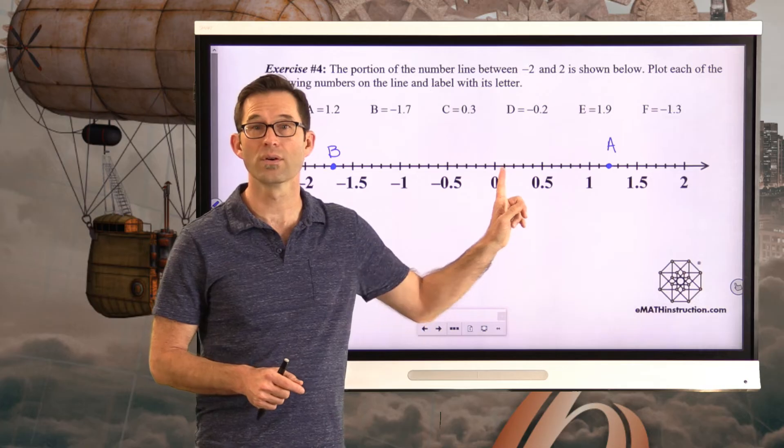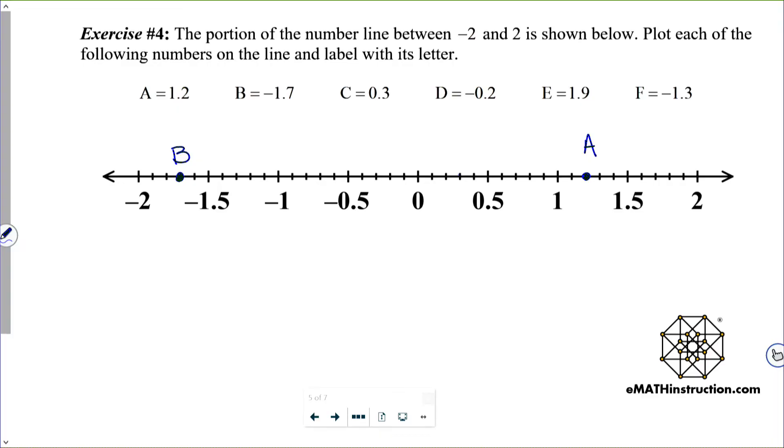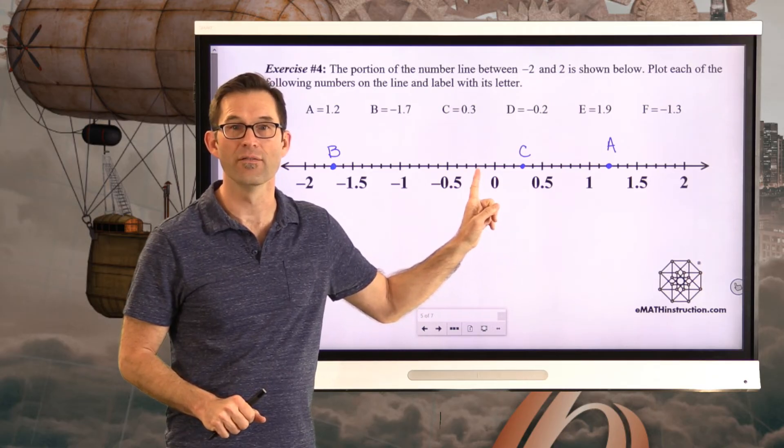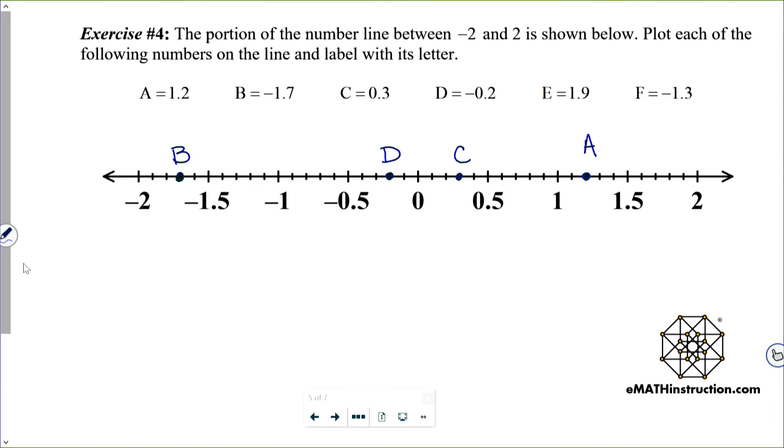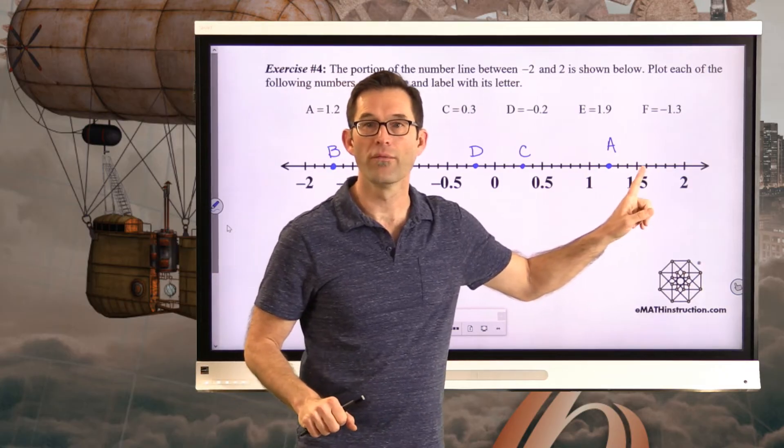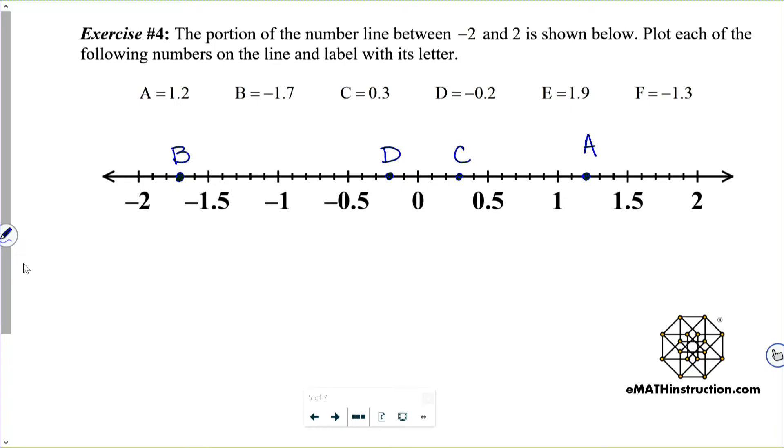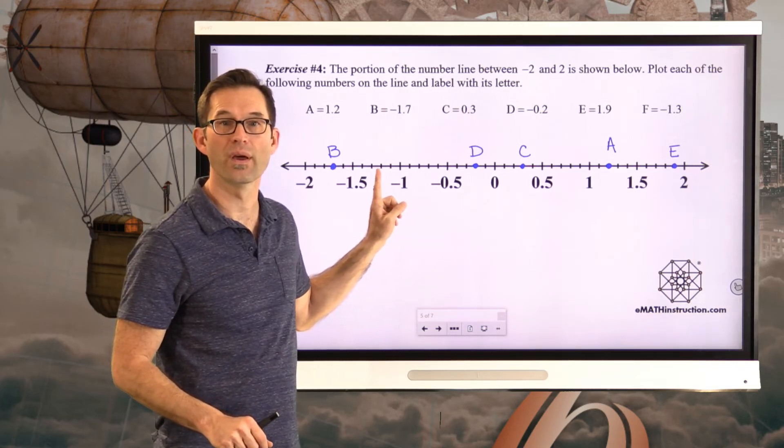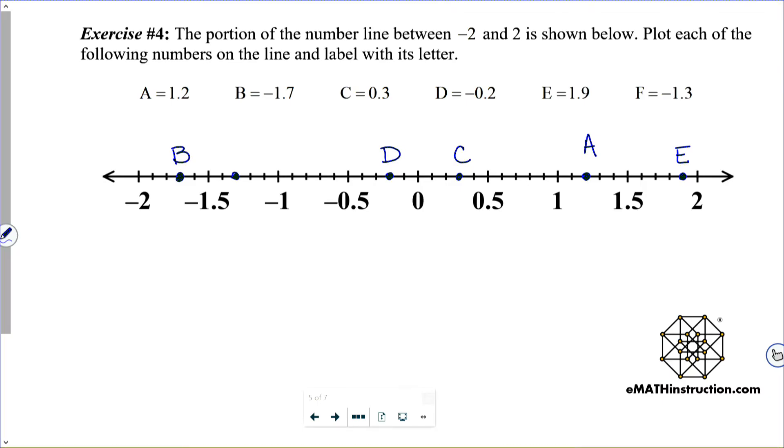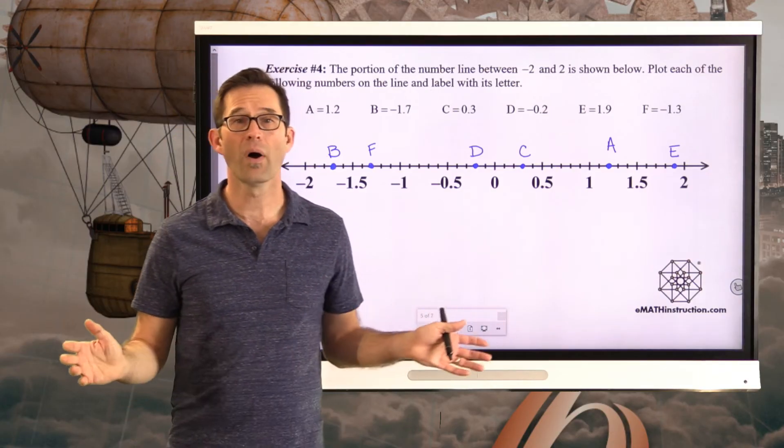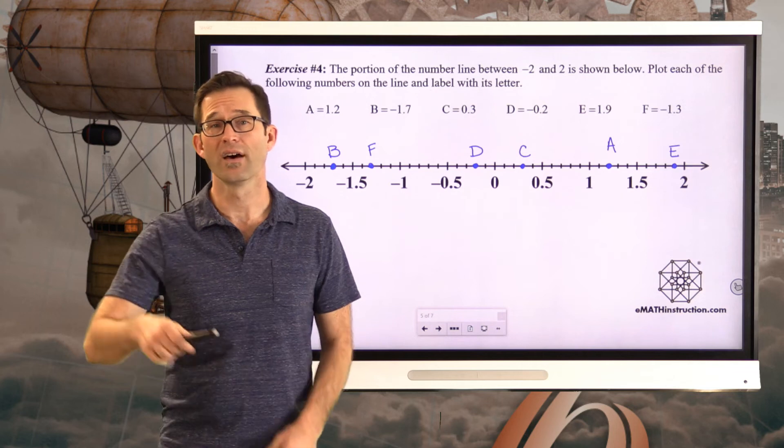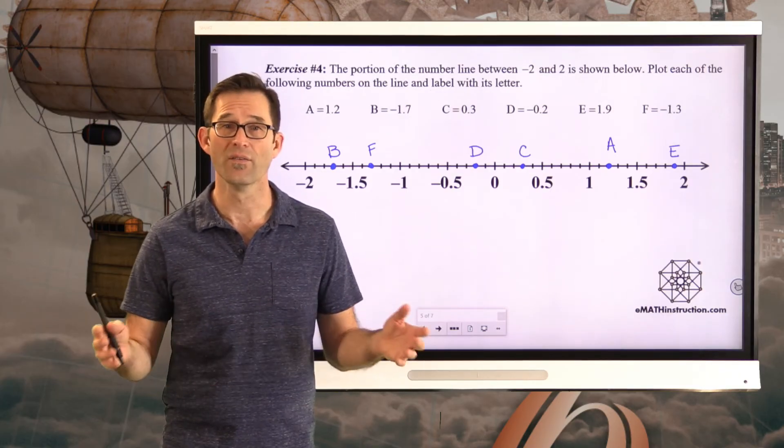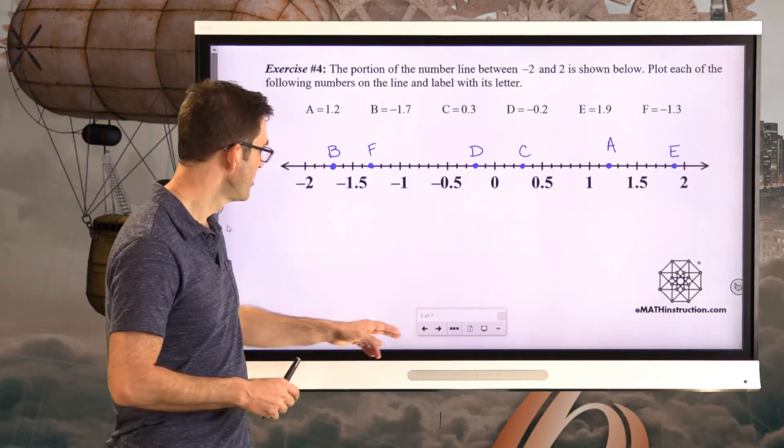Well, 0.3, not too bad. Here we're at 0, 0.1, 0.2, 0.3. Negative 0.2. Well, here we're at 0. Here's negative 0.1. Here's negative 0.2. E at 1.9. No problem. We got 1.5, 1.6, 1.7, 1.8, 1.9. And F at negative 1.3. Again, here we're at negative 1, negative 1.1, negative 1.2, negative 1.3. And there we are. Every positive number that's out there has kind of an equivalent negative number that's on the exact opposite side of the number line. So if you can plot something like 1.72, you should be able to plot something like negative 1.72. Let's keep going on this.